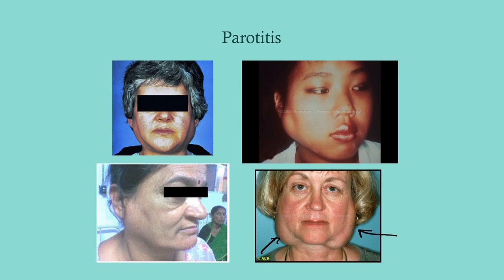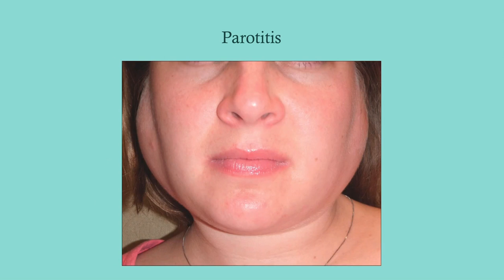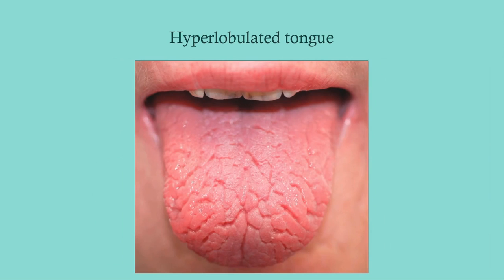This is parotitis — you can see the swelling, sometimes on one side but more commonly on both. It's an inflammation causing edema and enlargement of the parotid gland, which is a large gland so it's very easy to see. When you have dry mouth over a long period of time, the tongue can dry out and you get a hyperlobulated tongue — keep an eye out for that.